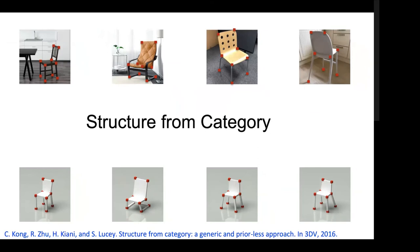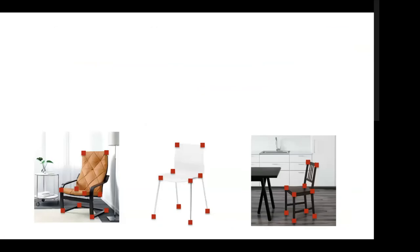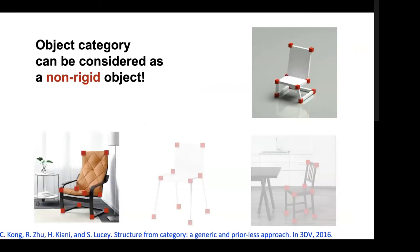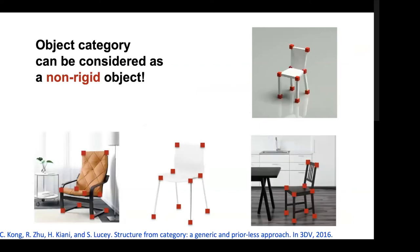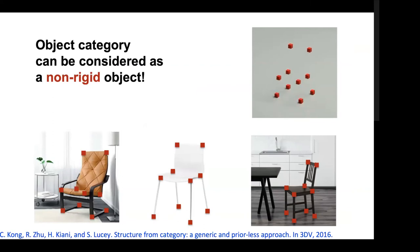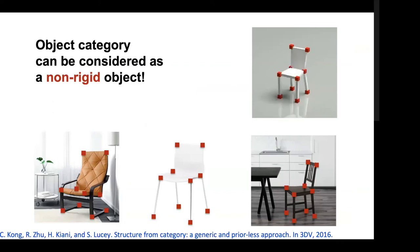Structure from categories is very much related to non-rigid structure from motion. That may seem weird — a chair is obviously rigid — but the object category chair is non-rigid, since chairs can have many different shapes and forms. So we can bring to bear all the excellent work done in non-rigid structure from motion to this problem.